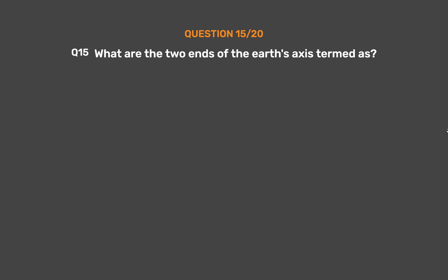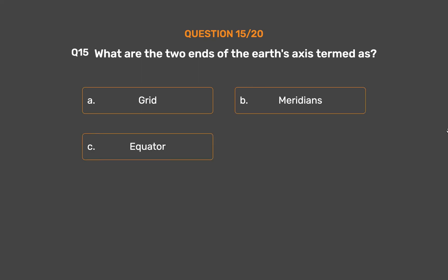Question number 15. What are the two ends of the earth's axis termed as? Option A: Grid. Option B: Meridians. Option C: Equator. Option D: Poles.